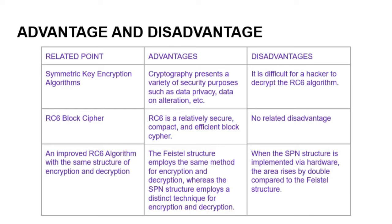For the next point is an improved RC6 algorithm with the same structure of encryption and decryption. Here we use the Feistel structure employs the same method of encryption and decryption, whereas the SPN structure employs the distinct technique of encryption and decryption. For this advantage, when the SPN structure is implemented via hardware, the area rises by double compared to the Feistel structure.